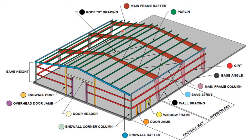This typical diagram of an industrial shed shows: the red members are the main rafters, the black lines are the x-bracing, and the green members are purlins which support the roof sheeting on top. The height from floor to the bottom of the roof is the eave height. The blue members are the end wall rafters, and the last tie or strut is the eave strut.